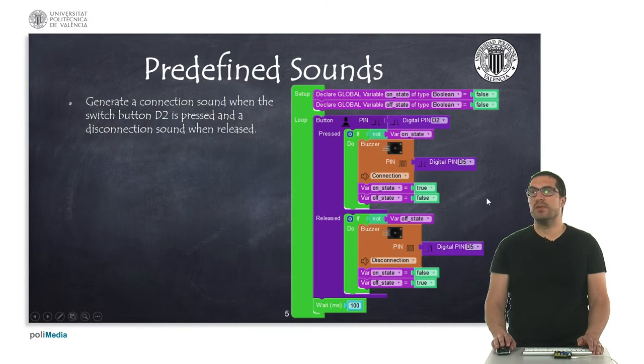In this first example, what I want to generate is the connection sound whenever I press a button and whenever I release the button, then I would like to reproduce a disconnection sound. For that, I'm simply creating two Boolean variables to detect if I'm pressed or not.